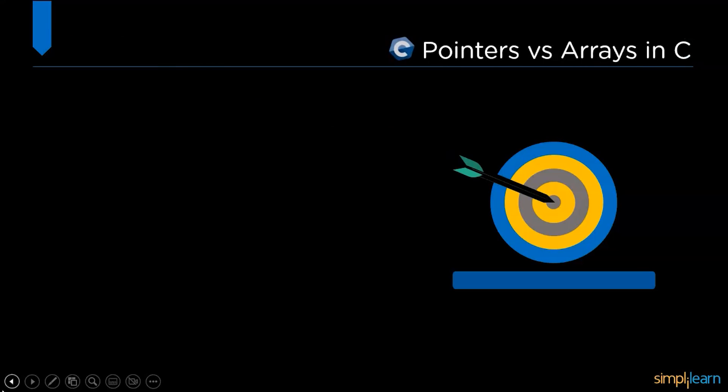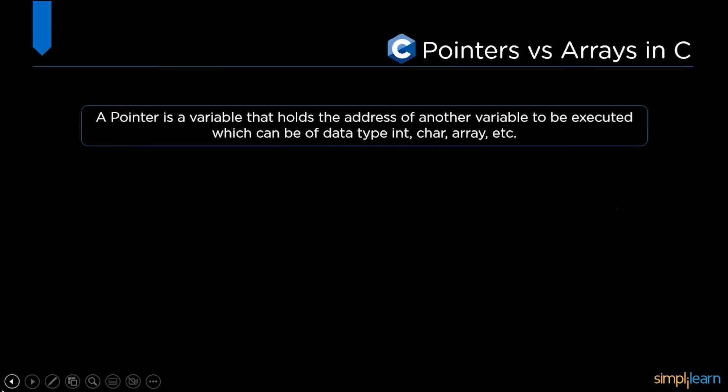So now without any further delay, let's get started with the one point agenda: pointers versus arrays in C. A pointer is a variable that holds the address of another variable to be executed, which can be of data type int, char, array, etc.